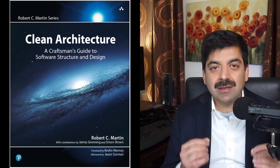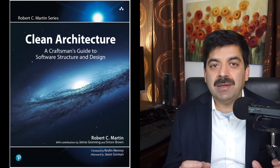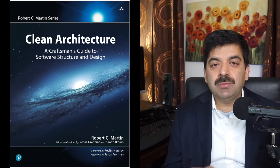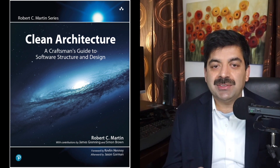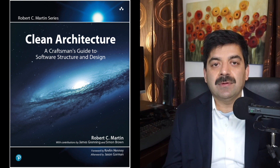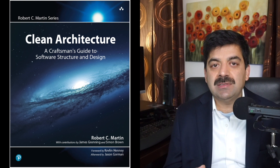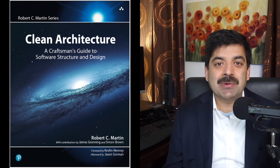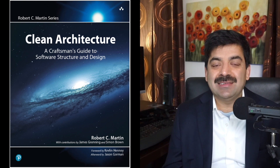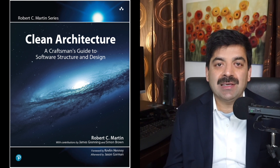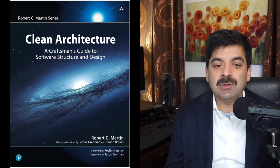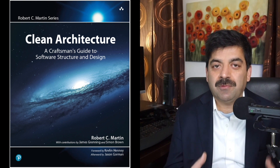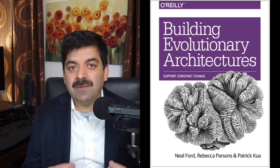Number three is Clean Architecture by Uncle Bob, who is a very popular person in software engineering. In this book he talks about good principles of component design and discusses how you can use SOLID principles, which are very popular design patterns. He discusses what impact these SOLID principles have on overall architecture, what microservices are, and the disadvantage of using a single database in microservices where you give away the advantage of microservices.